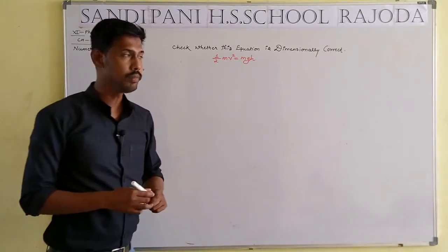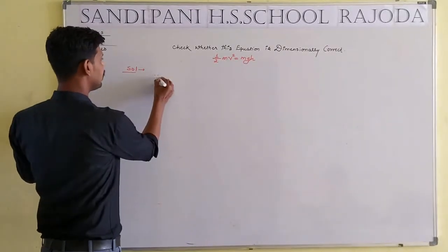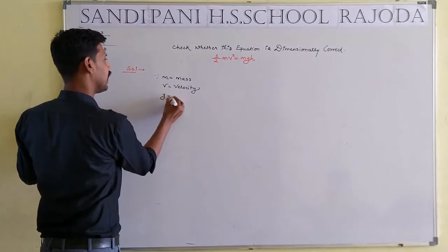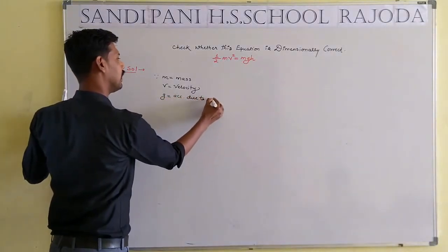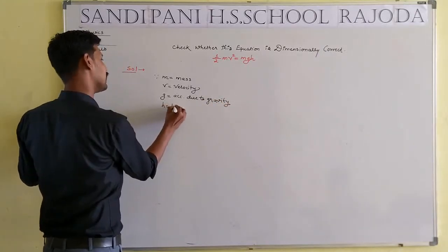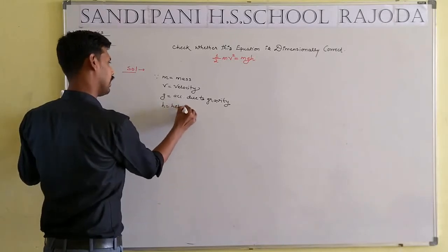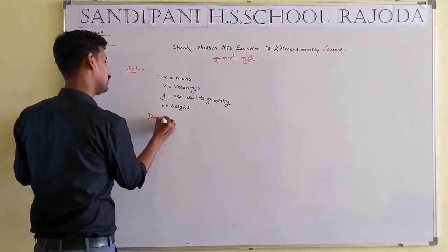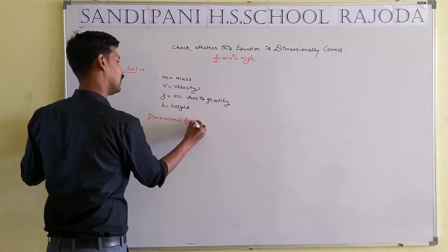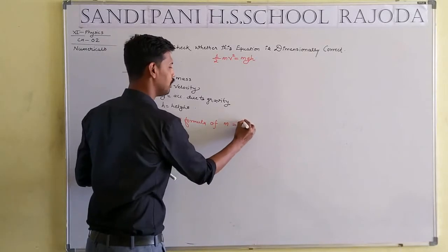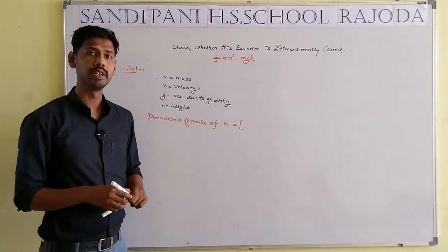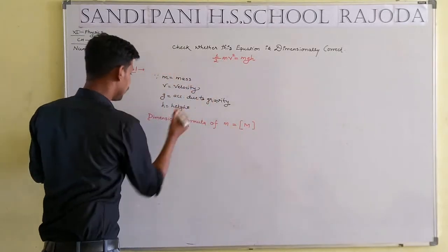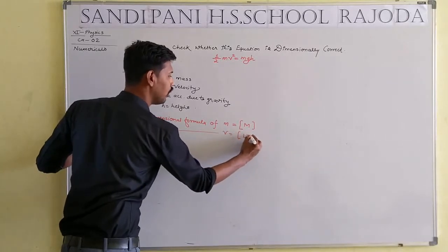Let us take the solution. We have the quantities m, v, g, and h. m means mass, v means velocity, g means acceleration due to gravity. The dimensional formula of mass m is represented by capital M. In the case of v, velocity will be equal to LT⁻¹.